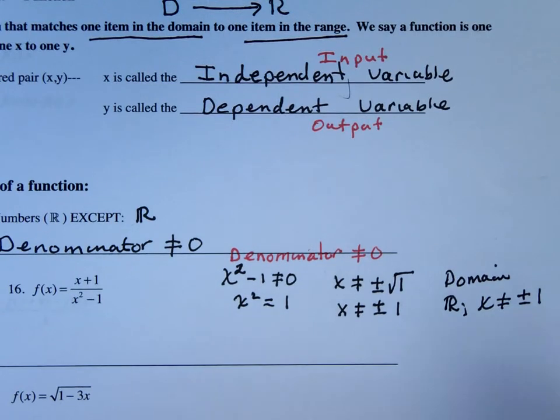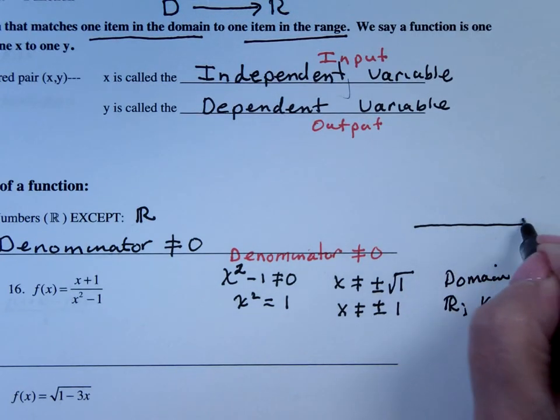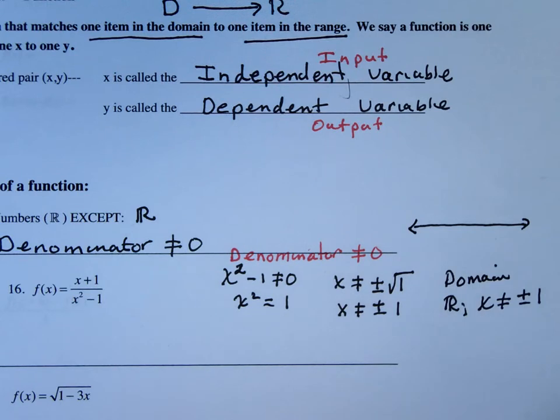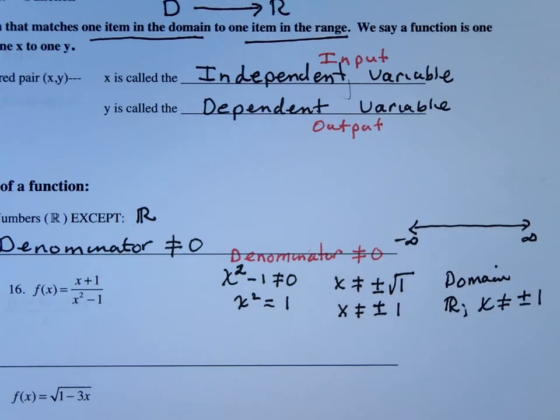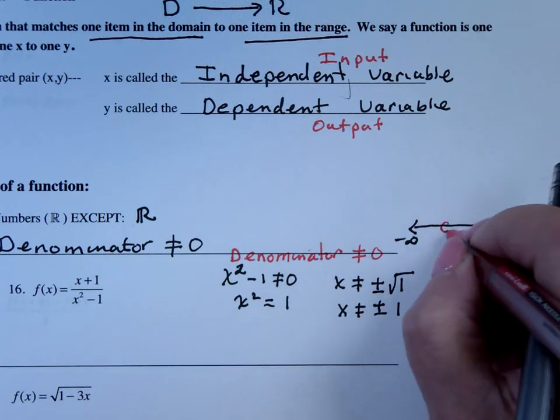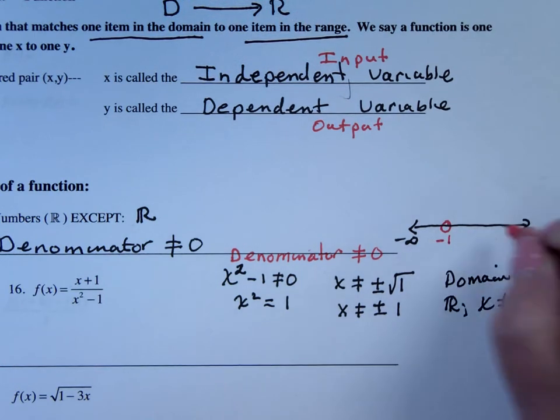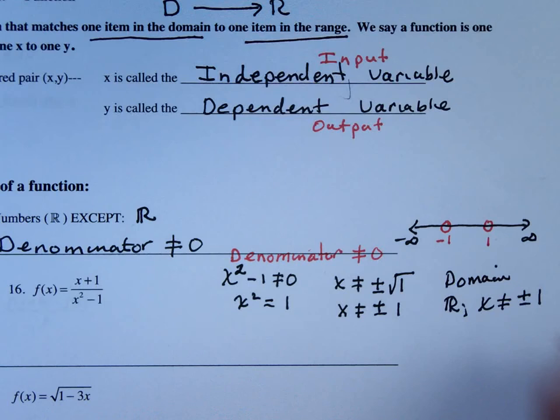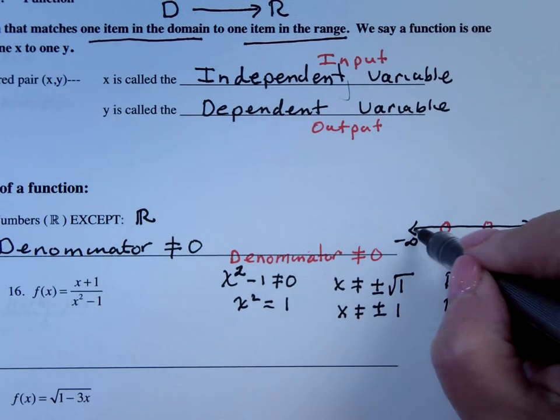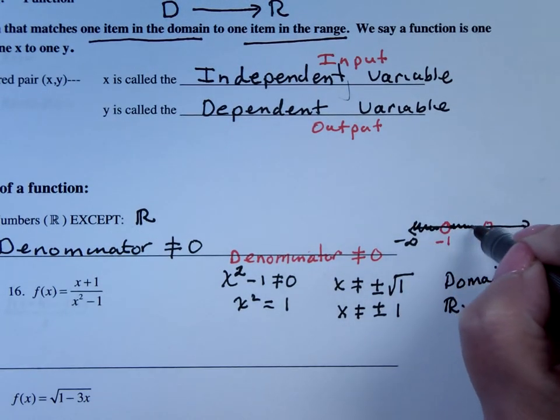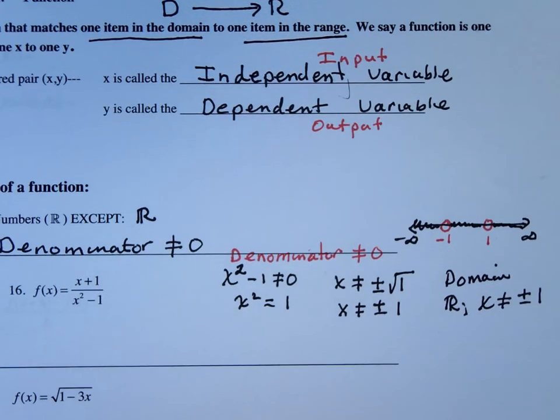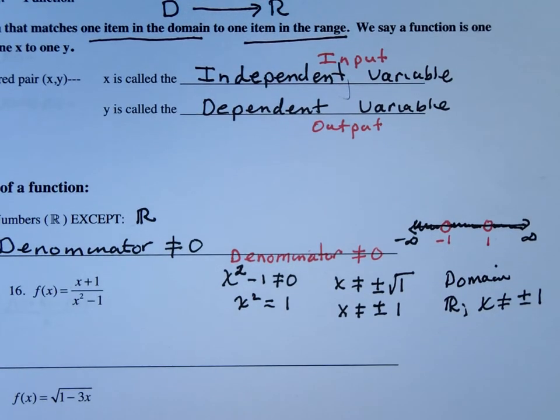So the domain here would be all real numbers except for plus or minus 1. So if I were looking at a number line for all real numbers, this would be infinity, this would be minus infinity. At negative 1, there would be an open dot, and at 1, there would be an open dot. And the domain would be everything except for those two things.